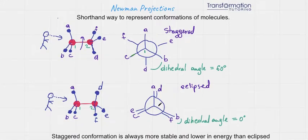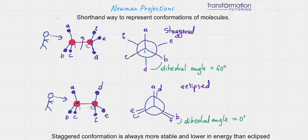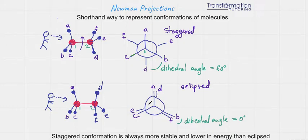Another conformation this molecule could take when we rotate around the single bond is when all of the attachments are behind one another. You can see A and D — D is right behind A — and the same thing goes for B and F, and C and E. This is how we draw it: A and D, B and F, E and C right next to each other.